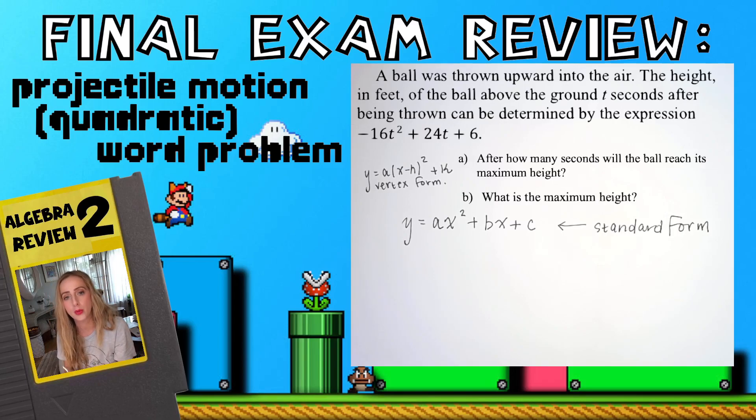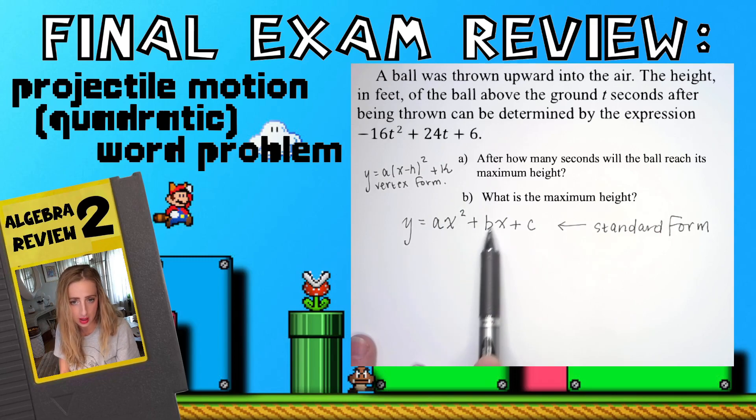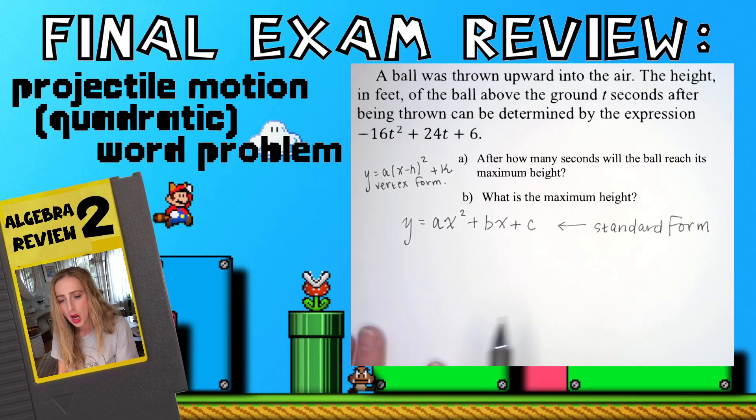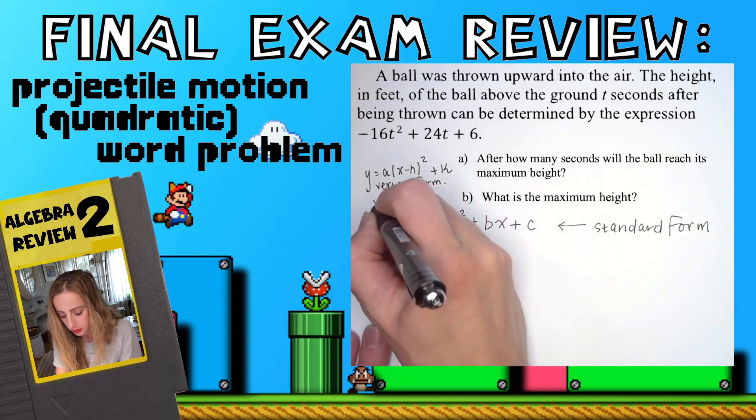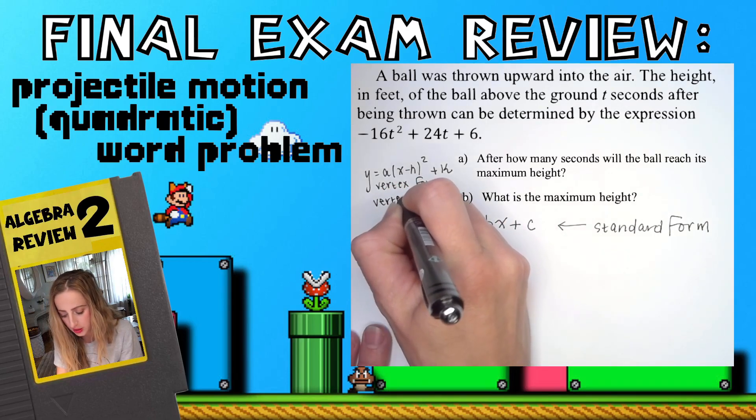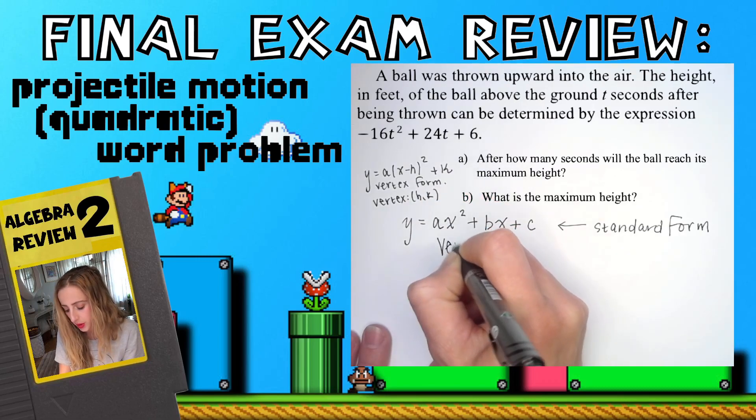Standard form has other perks like applications. In this particular word problem, you can build a model very easily. If it's something falling on Earth with initial velocity due to gravity being negative 32, you put a negative 16 right here, the initial velocity goes right there, and the initial height goes right there. Boom, you just built a model very easily. If we want the vertex from vertex form, that's just (h, k).